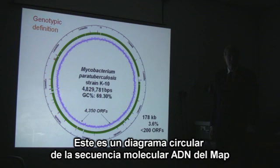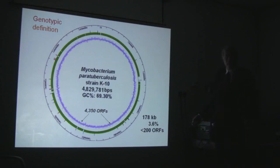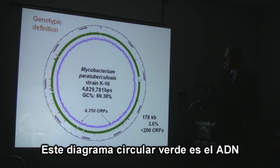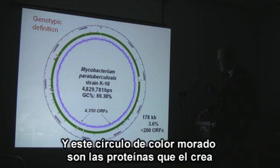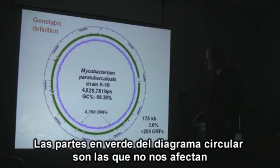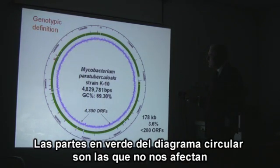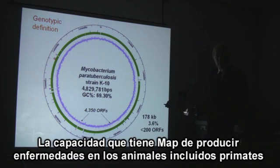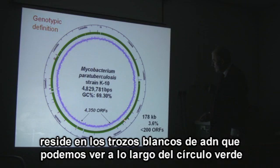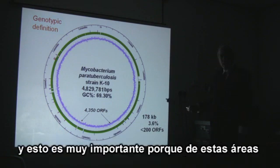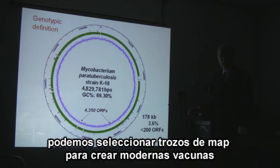This is a diagram of the DNA sequence of the entire MAP bug genome, obtained from the Genomic Center at the University of Minnesota. The green circle here is the DNA, and the purple circle here is the proteins that it makes — there are 4,350 of them. The ability to cause disease in so many animals, including primates, resides in these little white bits of DNA around the MAP genome. And it is from these areas that we select the pieces of MAP to make modern vaccines.